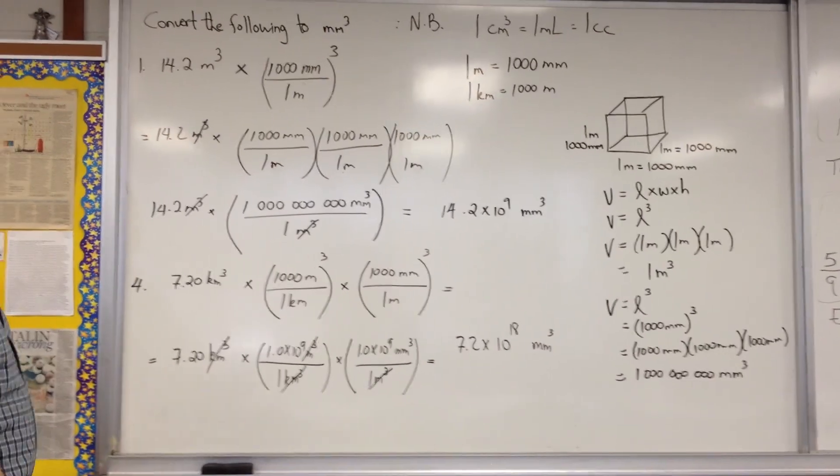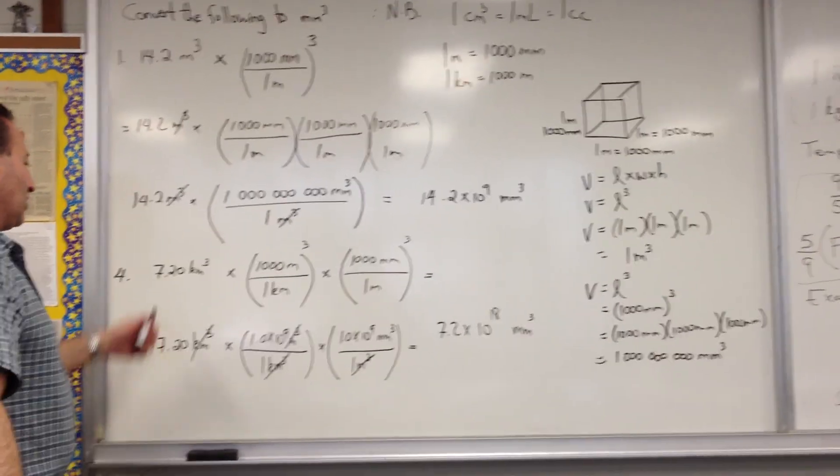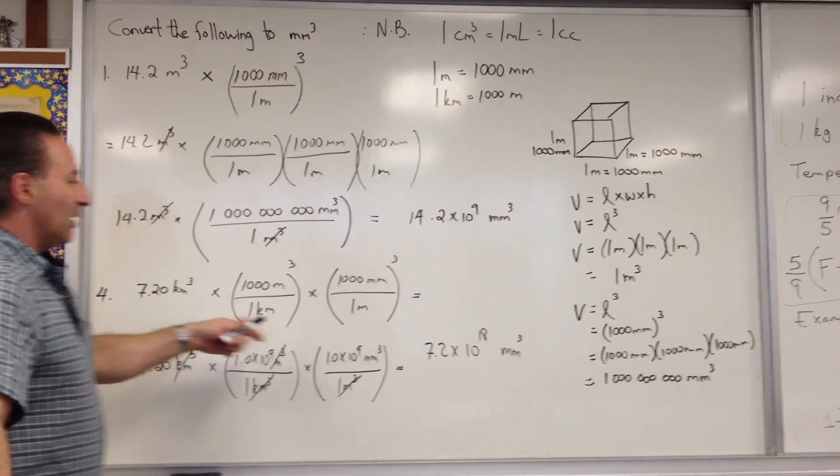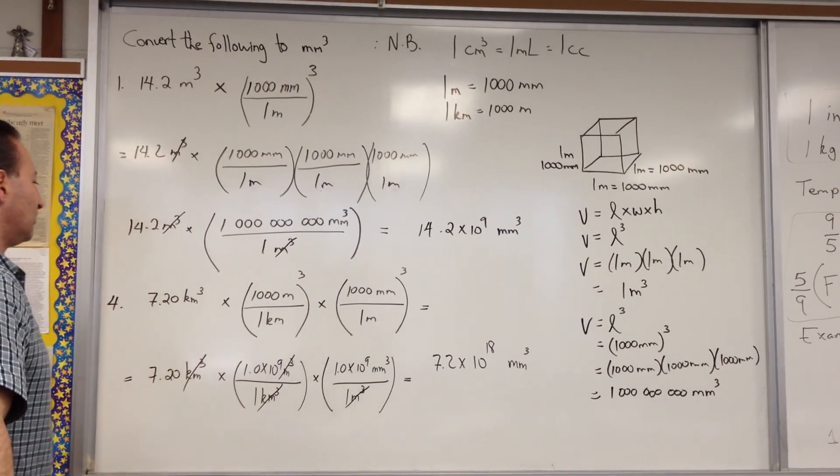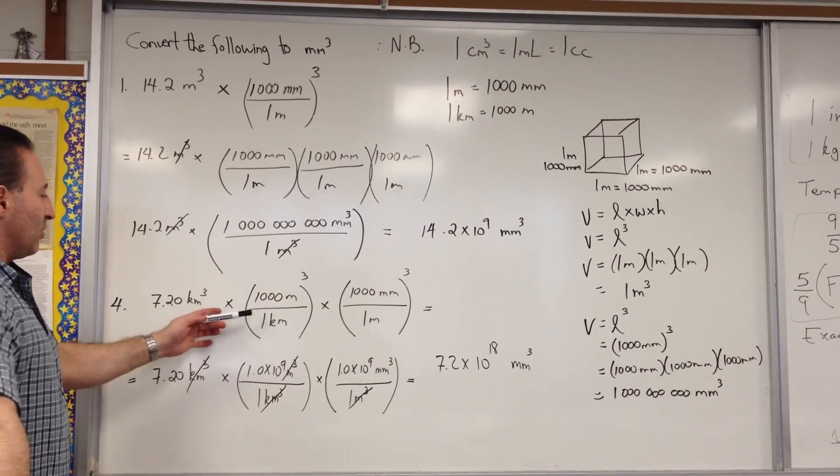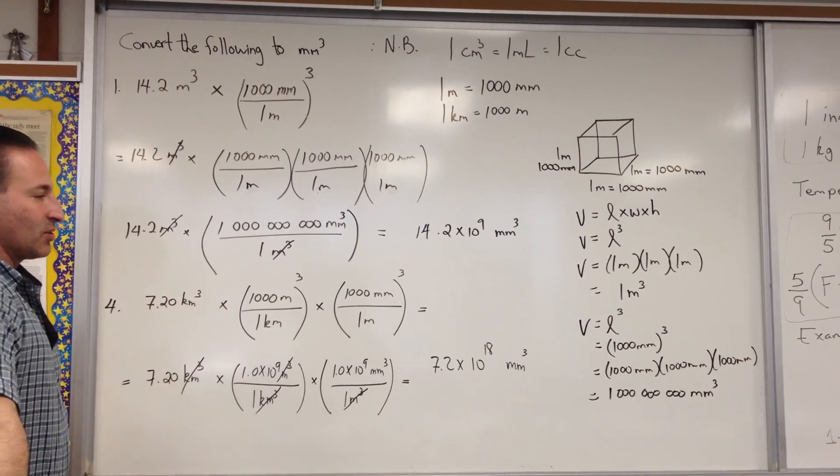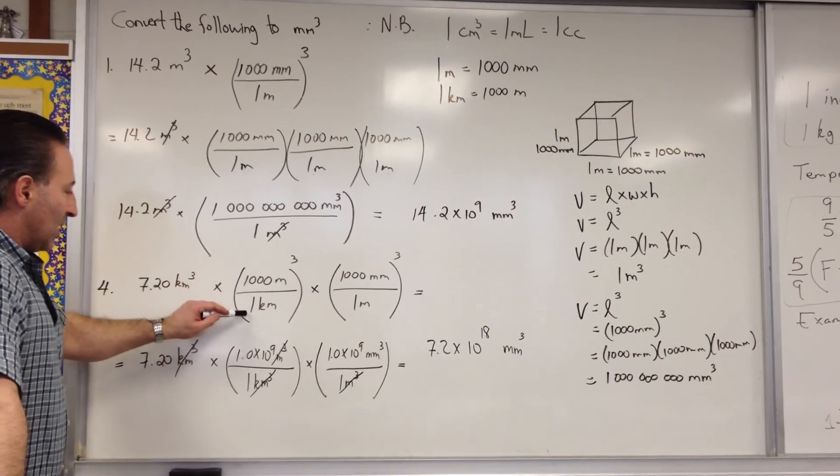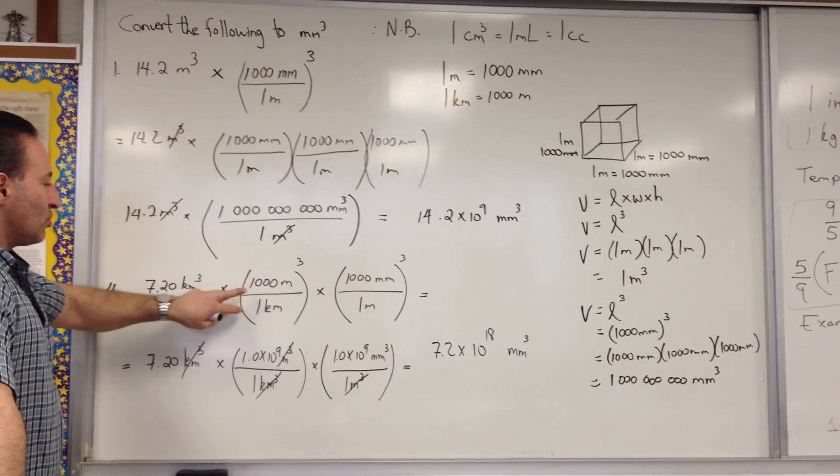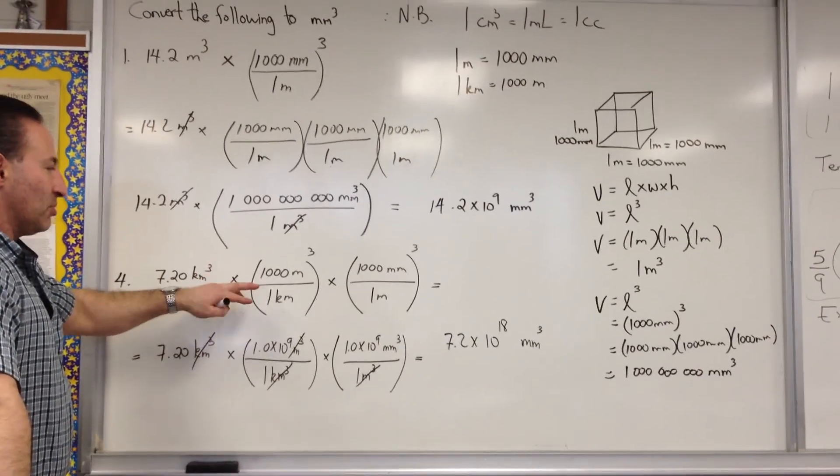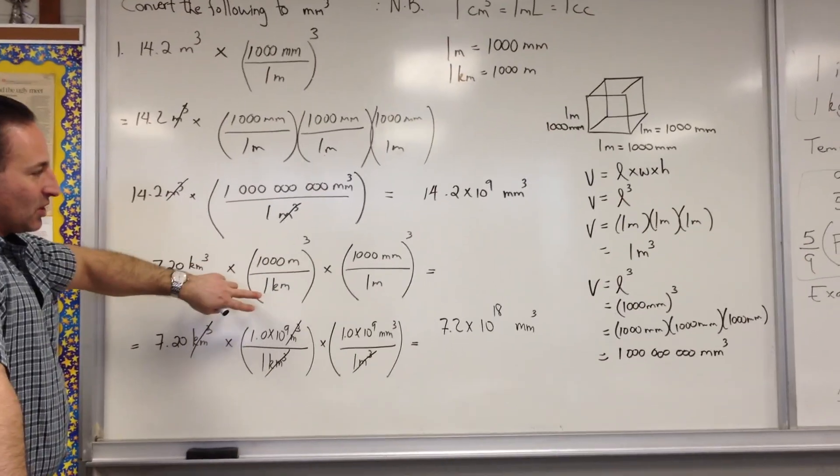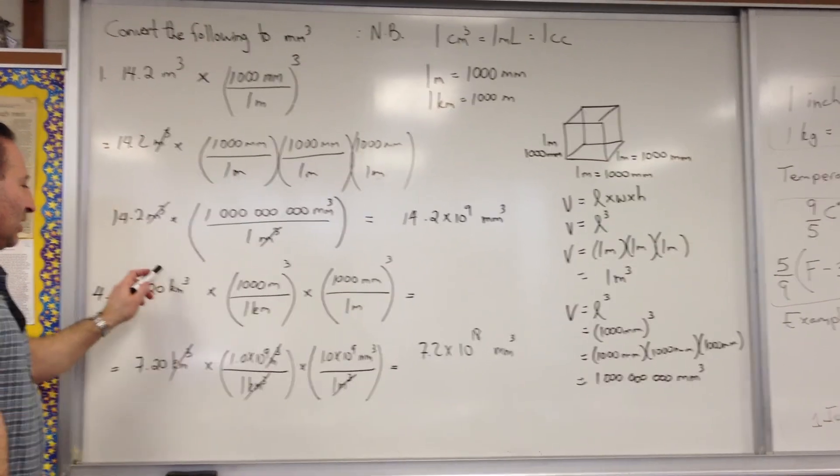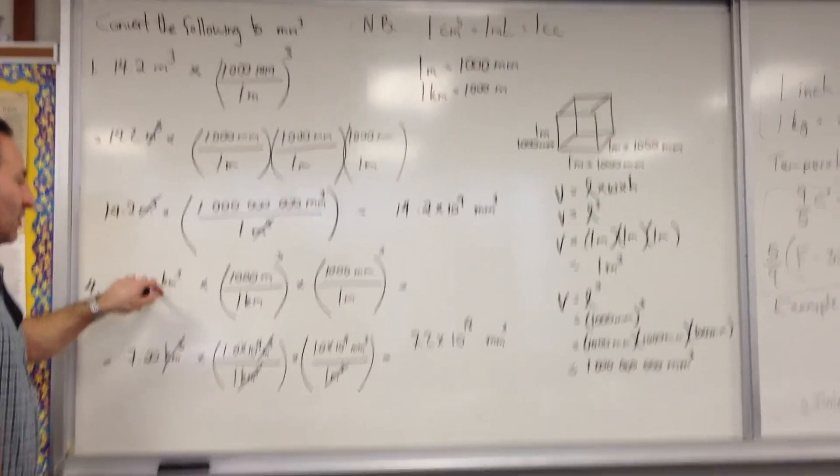In the next calculation, we need two conversion factors because they're asking us to go from 7.2 kilometers cubed to a measurement of millimeters cubed. So, the first step in the conversion is to convert from kilometers to meters. We all know there's 1,000 meters per one kilometer. So, we say 1,000 to 1. And how are you going to choose which way to write this conversion factor? Do you put kilometers on top or do you put meters on top? Well, the way you decide that is that you want to eliminate kilometers. So, the only way you're going to eliminate kilometers, which is here in the numerator...